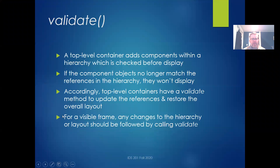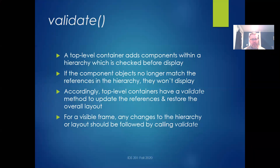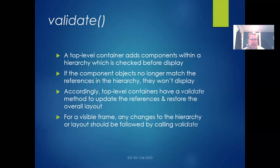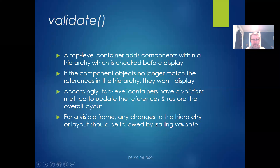The next thing: if you actually change the component hierarchy, you need to call a different method called validate. Any top-level container, if it adds components to the hierarchy, can do that. But it's computationally expensive, so the system won't check that dozens or hundreds of times a second. Java waits for you to tell the window that something changed and it needs to restructure. Anytime something gets weird with the hierarchy — if you add a new component after it's drawn or try to remove one — weird and unpredictable things can happen.